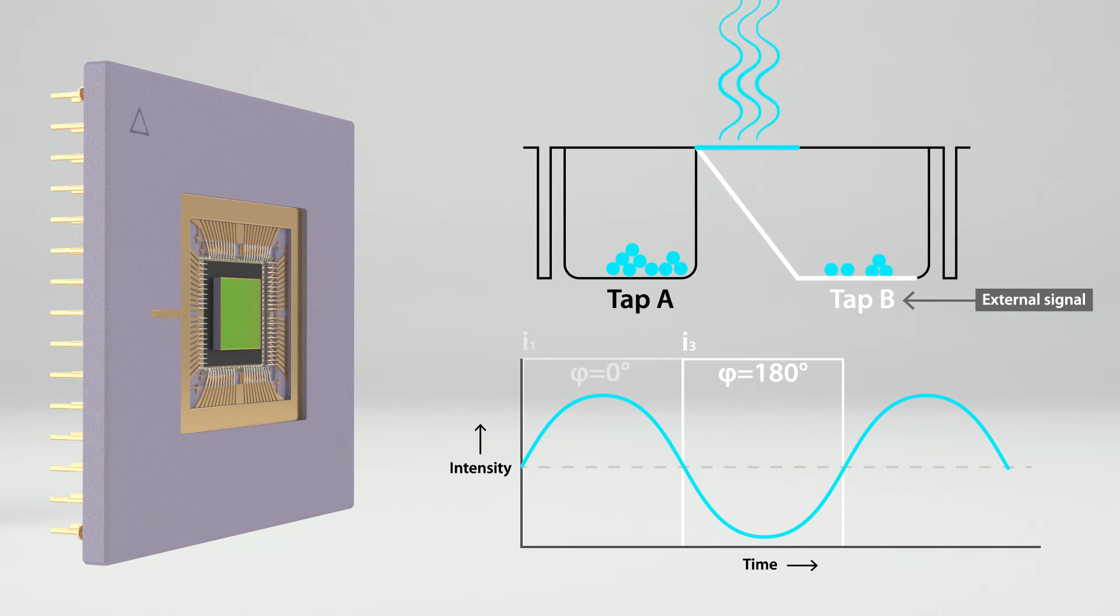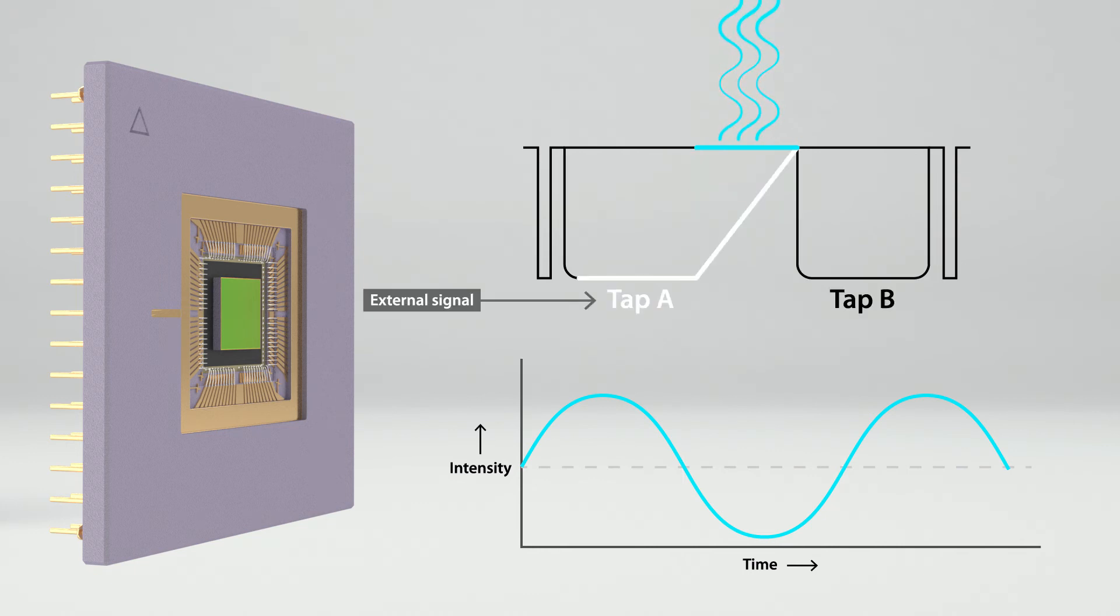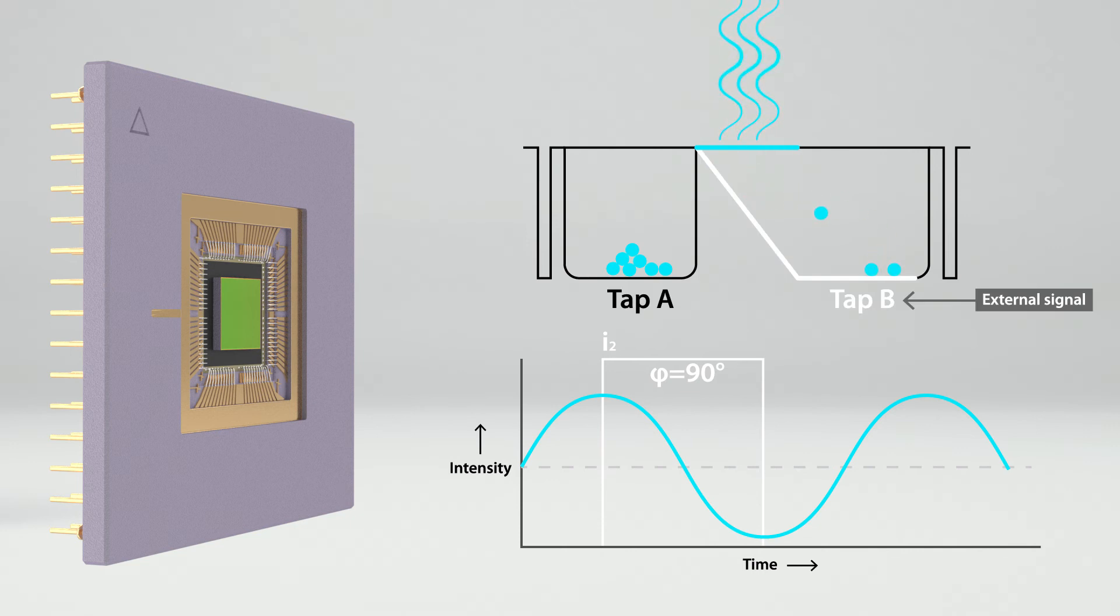The image sensor modulation is shifted relative to the excitation light. Then, a measurement is performed at a phase angle of 90 degree. The charge carriers collected in tap A create image I2. Tap B samples the information at a phase angle of 270 degree, creating image I4.